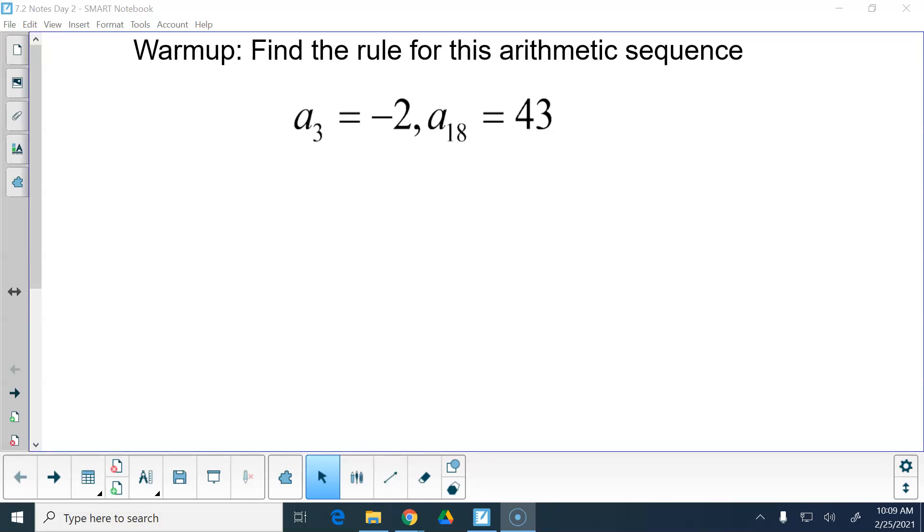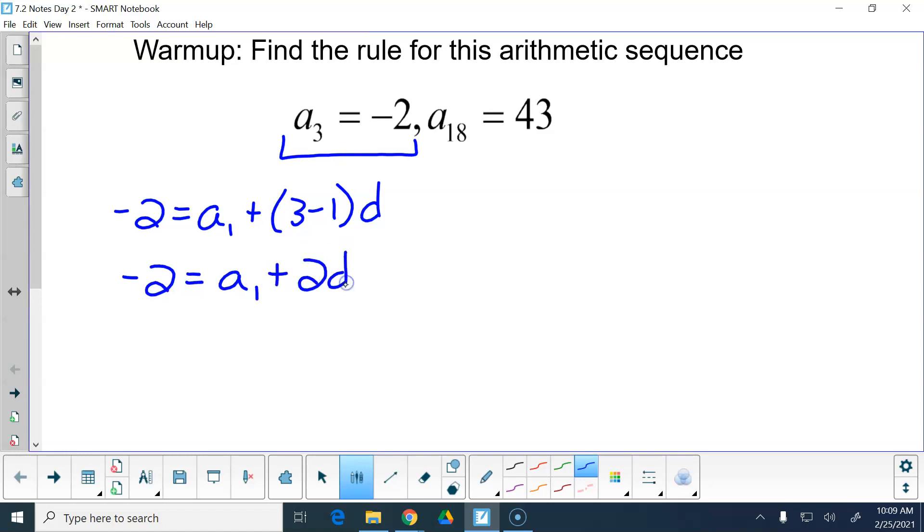Alright, so first thing we've got to do is we've got to make this term into an equation. That would be negative 2 is equal to the first term plus 3 minus 1 times our common difference, which we don't know. So that would be negative 2 equals my first term plus 2 times the common difference. Then we've got to make this second one into its own equation. Since it's the 18th term, we're going to go 18 minus 1 times the common difference, so that's going to be 43 equals my first term plus 17 times the common difference.